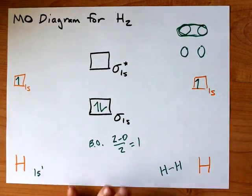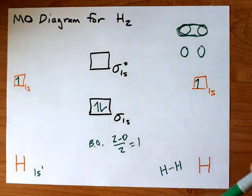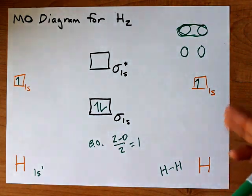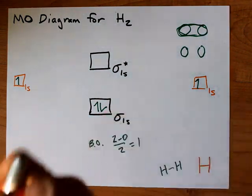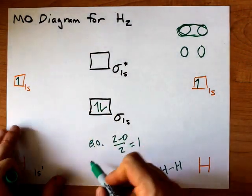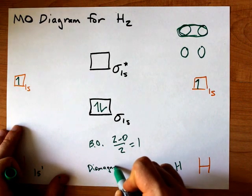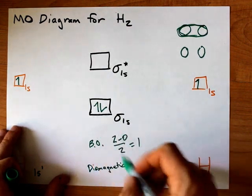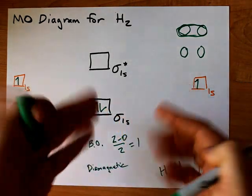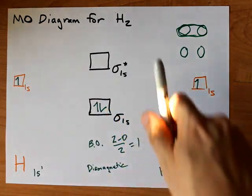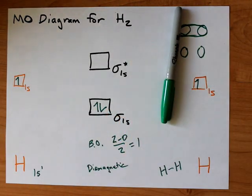This probably is not a surprise if you've had any experience drawing Lewis structures. Lastly, because all of the electrons are paired up, this is a diamagnetic molecule. There are no unpaired electrons. Cool? Cool. Well, there's your diagram. Best of luck to you.